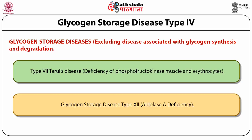Phosphofructokinase catalyzes the phosphorylation of fructose-6-phosphate at position 1. Those affected have exercise intolerance, muscle cramps and myoglobinuria. Treatment is directed towards avoiding exercise. A high-protein diet with branched-chain amino acids like leucine, isoleucine and valine, and vitamin B6 supplementation are suggested to rebuild damaged muscles.